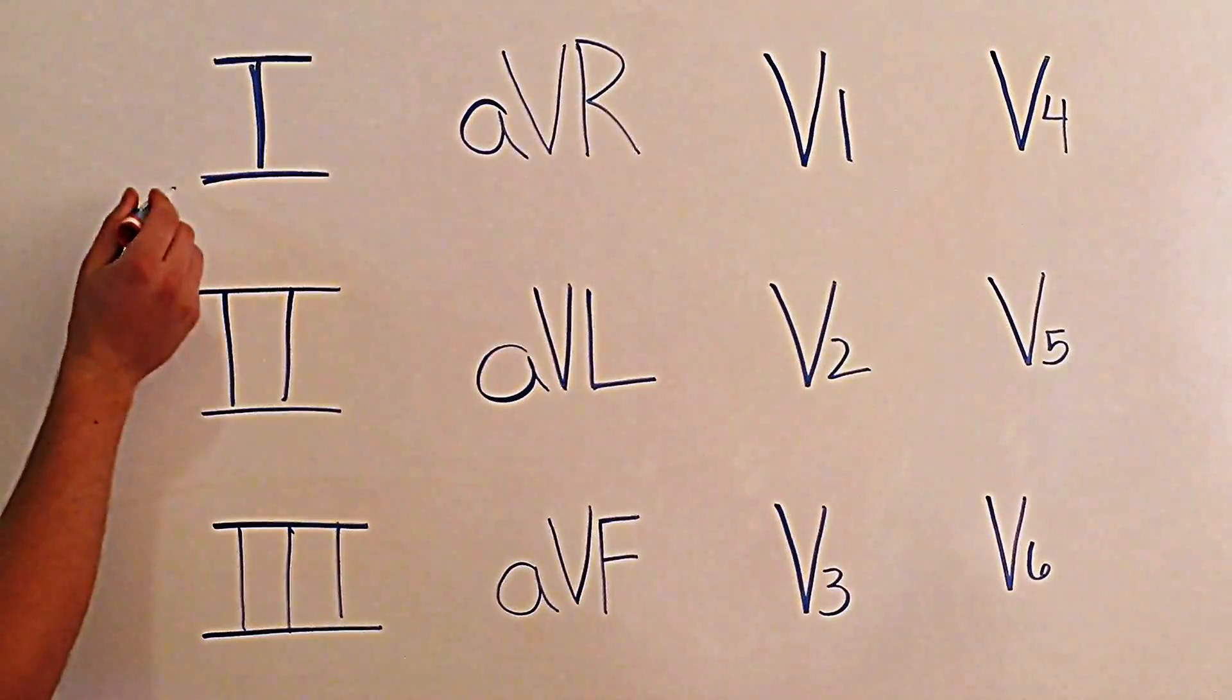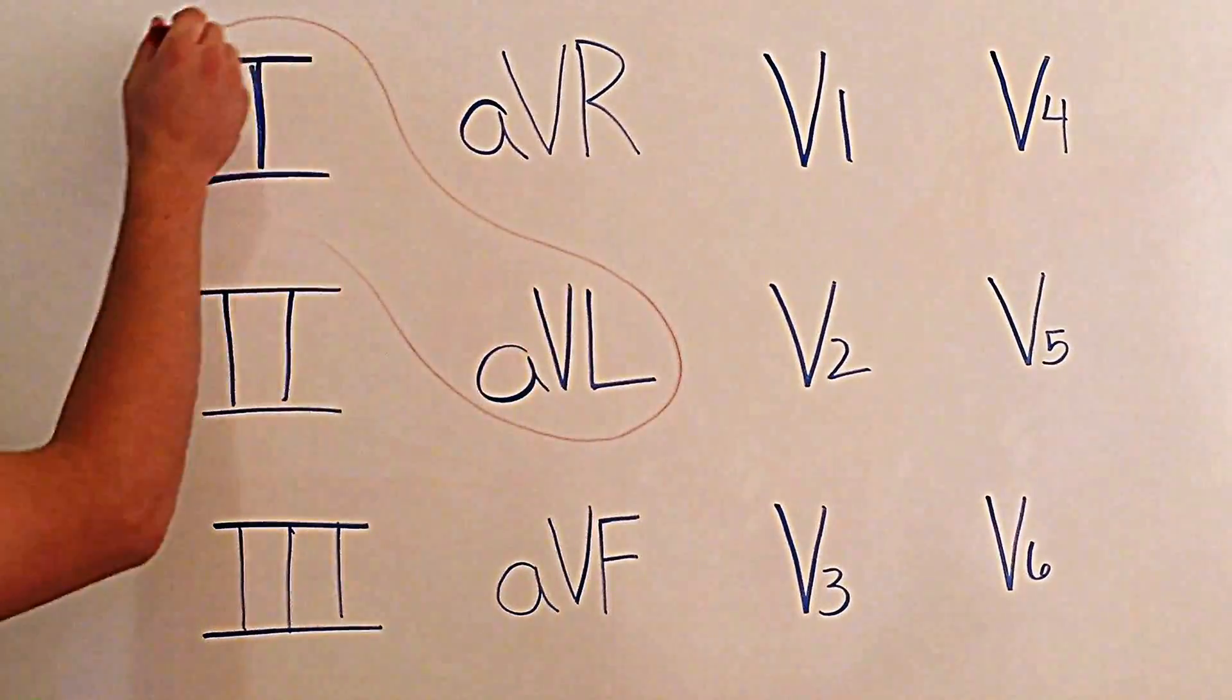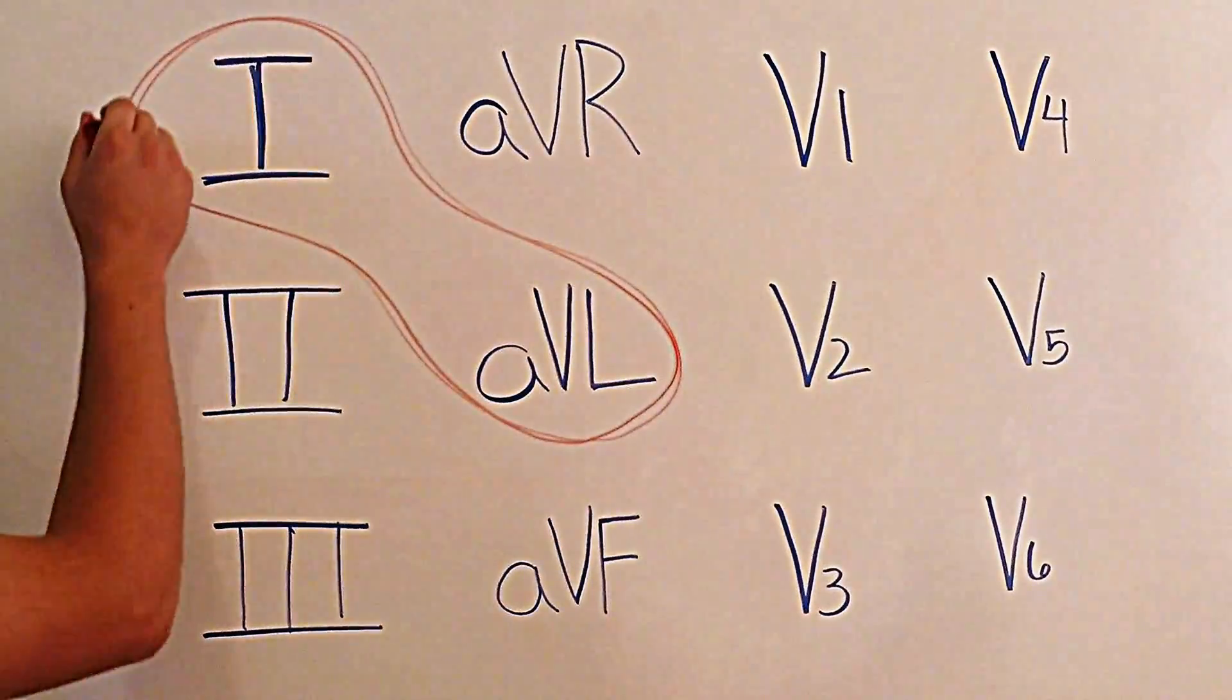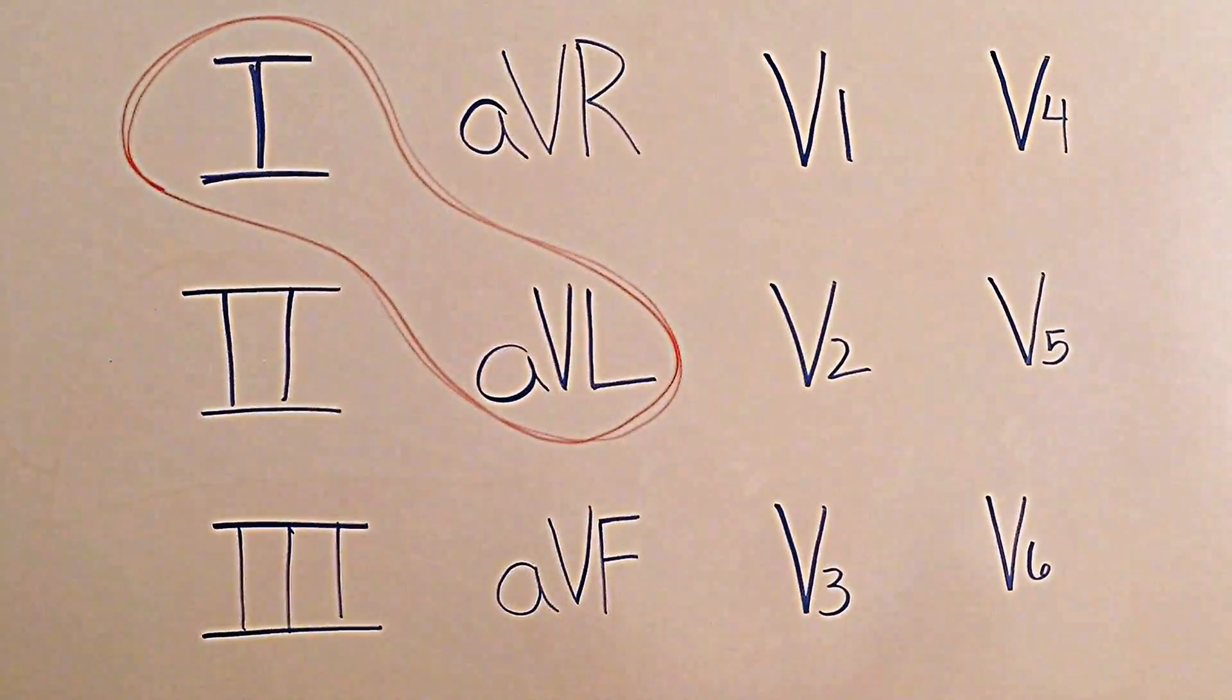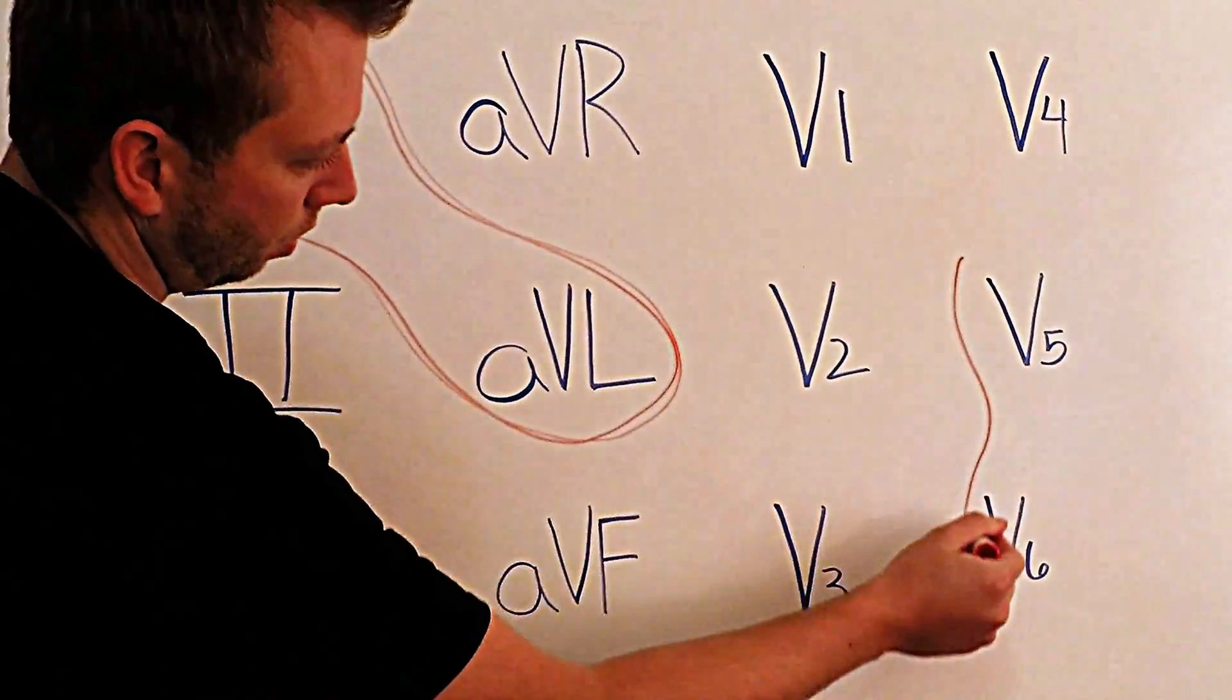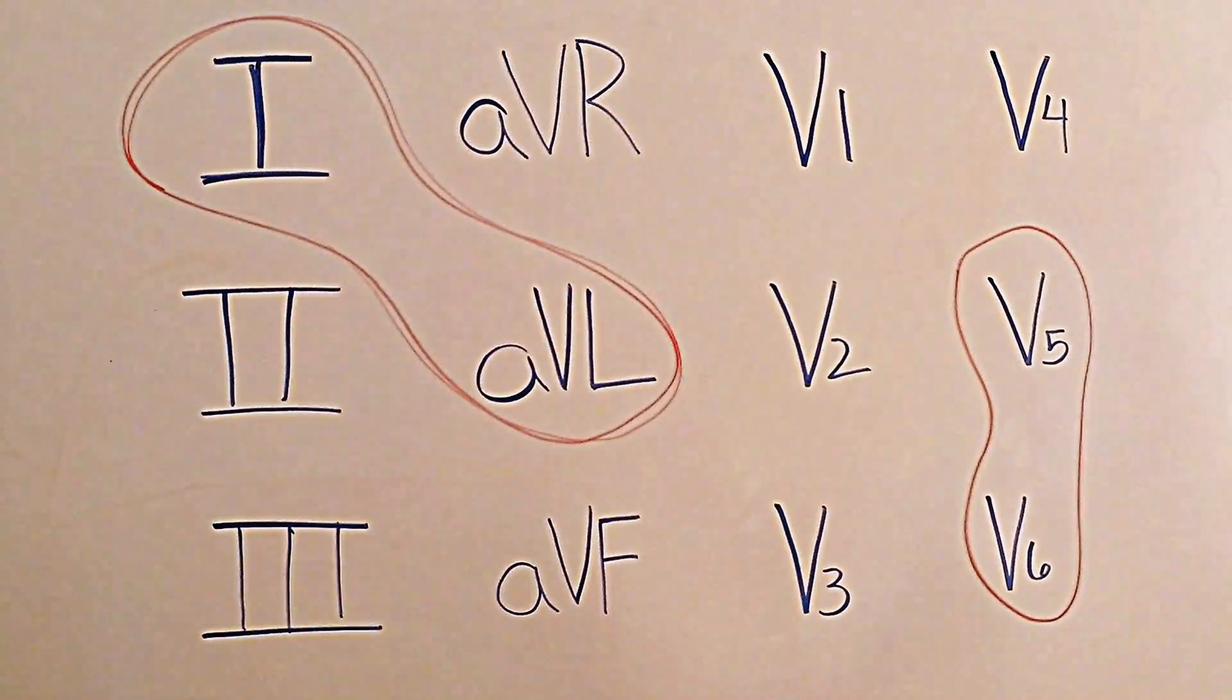So the first one you're going to circle is lead I and aVL. Now you're going to move all the way to V5 and V6, and I'll explain why you're doing it in this order in a minute.